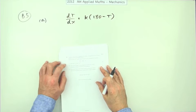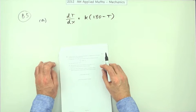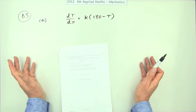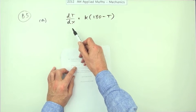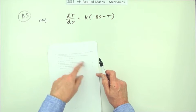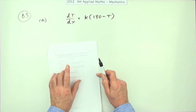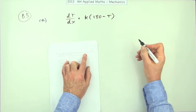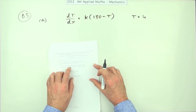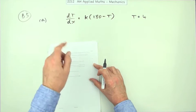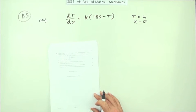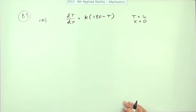B5, the last question in the 2012 Advanced Higher Applied Maths. There's a first-order differential equation and for four marks you have to solve it to get t in terms of x. There will be a constant. It mentions turkeys and refrigerators and ovens — temperature, where t is the temperature of the turkey, which was four degrees, and x is time. So t equals 4 when x equals zero.